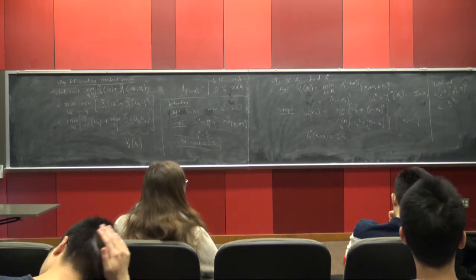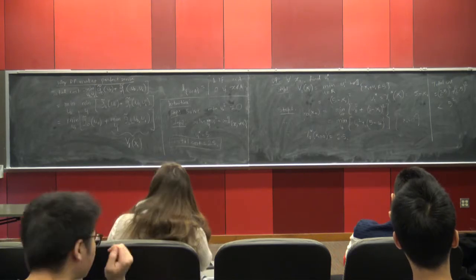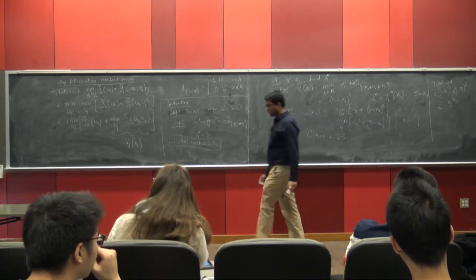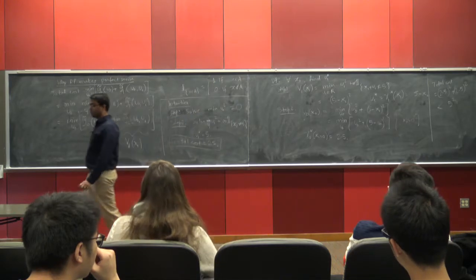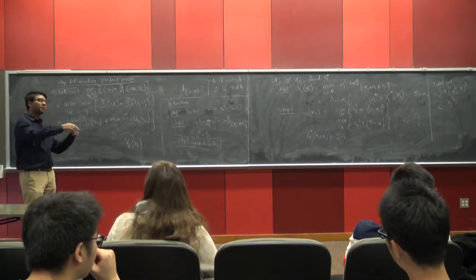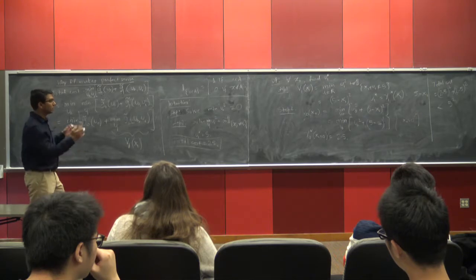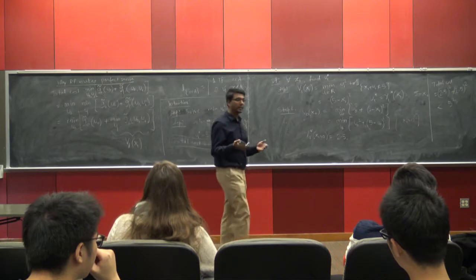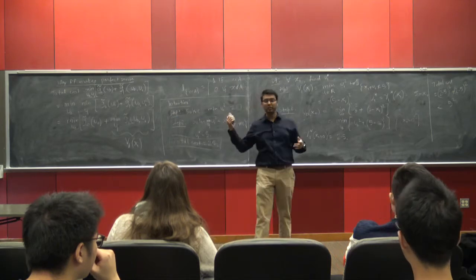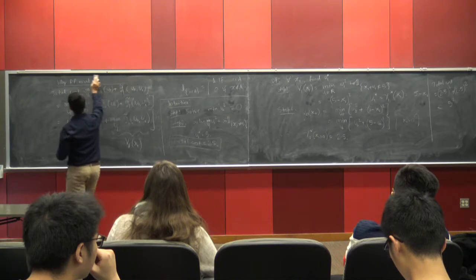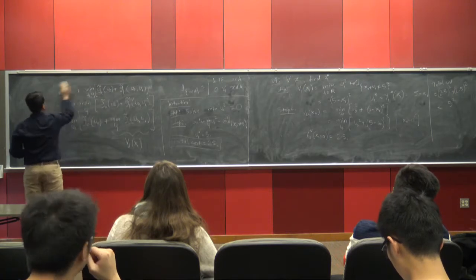Now I want to talk about neural networks, because you can think of a neural network as a dynamic optimization problem. This viewpoint is seldom seen in the literature, but it's a valid one. That's what I want to cover next.